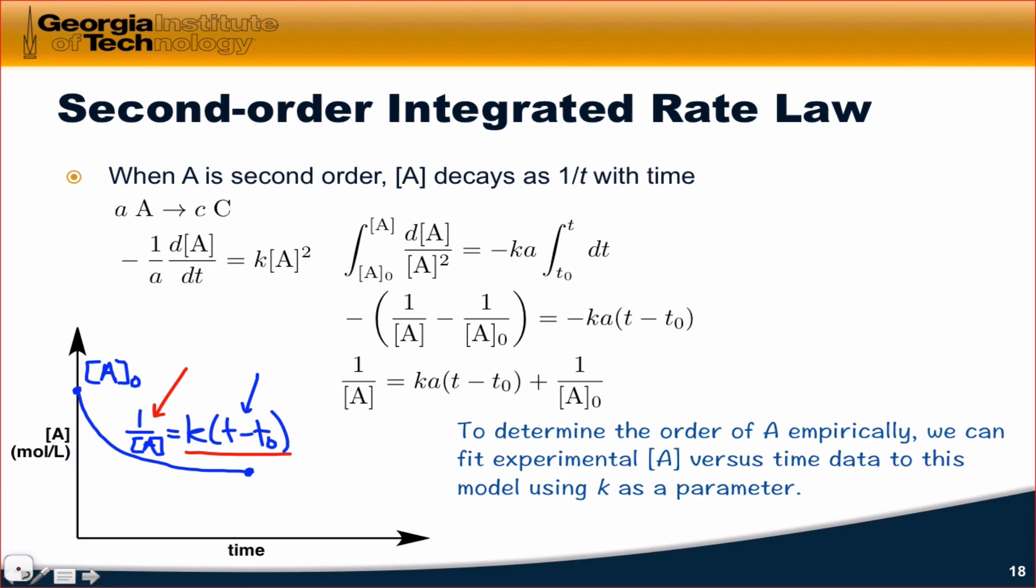Just like we did for the first order model, we can determine the order of A empirically by fitting experimental concentration versus time data to this model, and seeing if it fits better than the zero or first order cases. If it does, we can conclude that this reaction is, for example, second order in A.